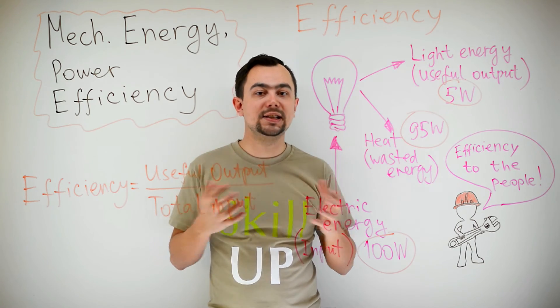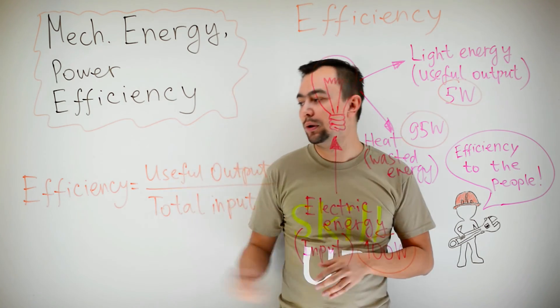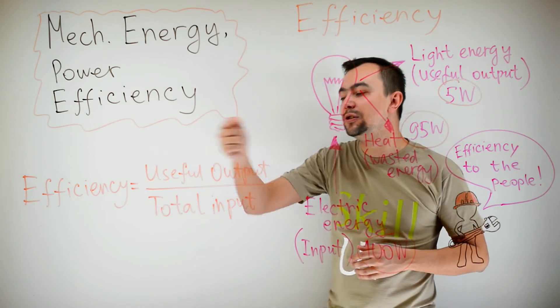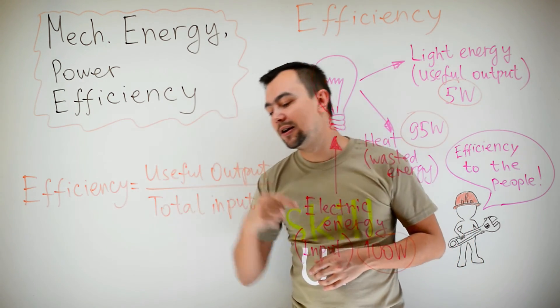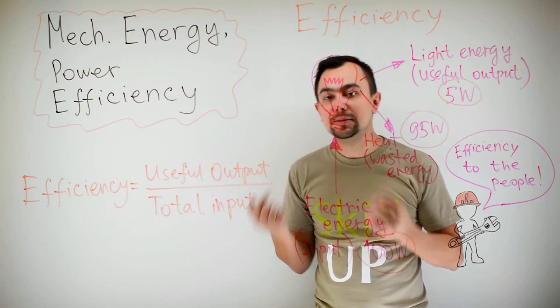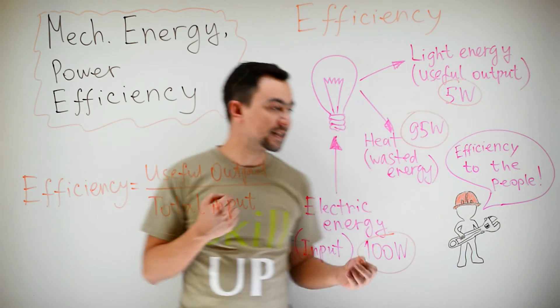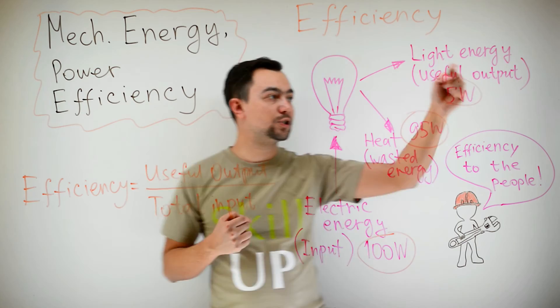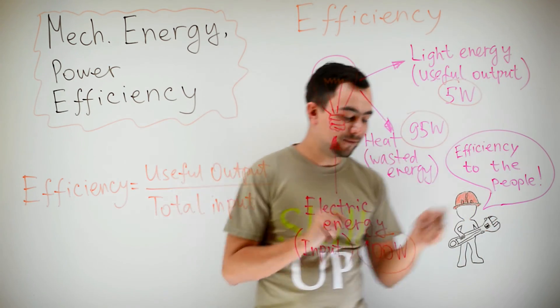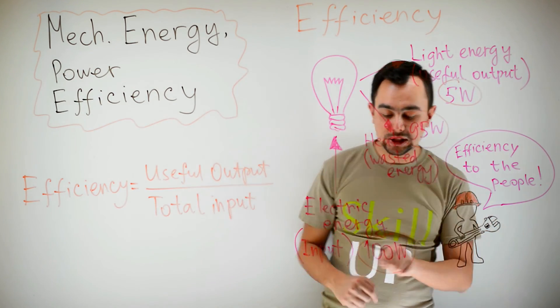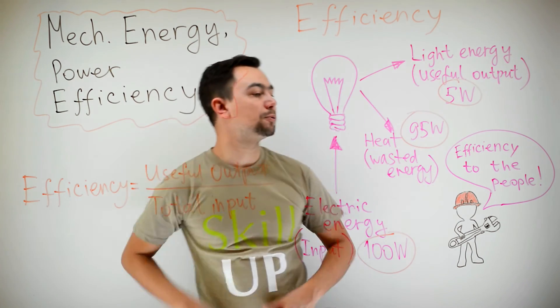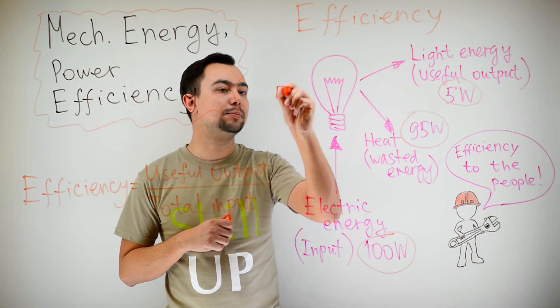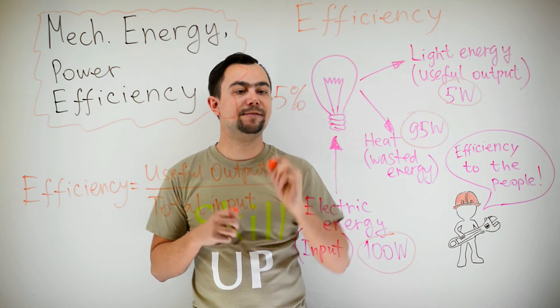So, what does efficiency mean? Well, efficiency is defined as useful energy or power output divided by the total energy or power input. In this case, it's 5, the useful output, divided by the total input, which is 100. 5 divided by 100 is 5%. So, this light bulb is 5% efficient.